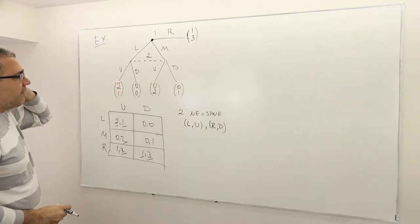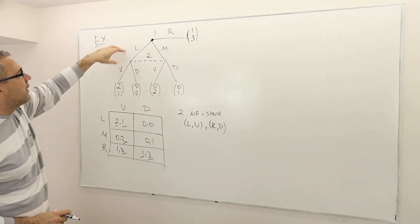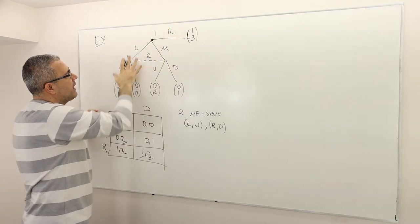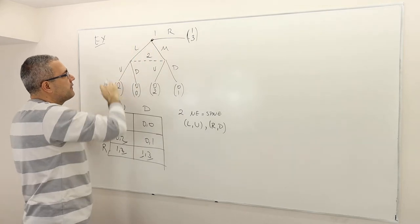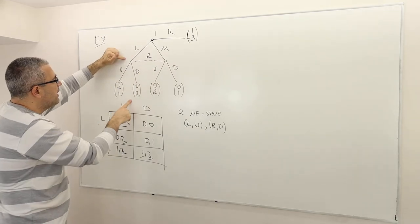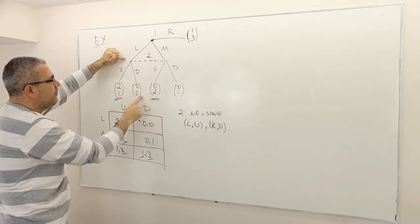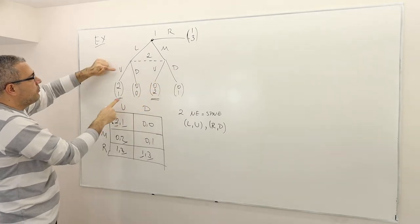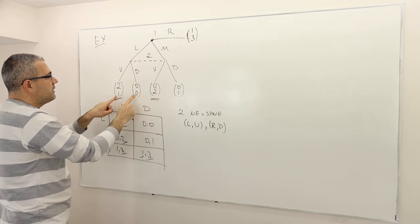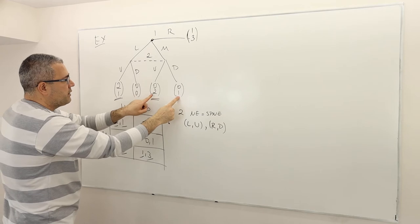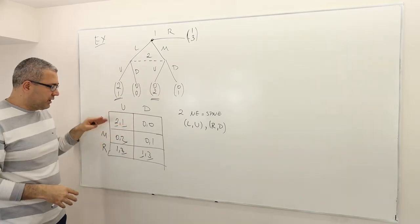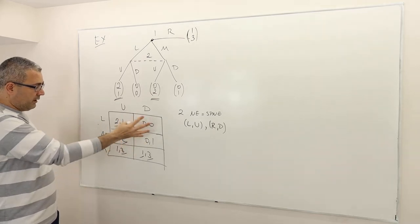Nash equilibrium and subgame perfect Nash equilibrium are exactly the same thing in this game because there is no proper subgame. So let's look at those Nash equilibria. I want to point out one thing. Forget about R. If you look at this part of the game where player one plays either L or M — meaning information set two is reached — playing U is obviously better for player two than playing D, right? Because if you play U, you get either one or two. However, if you play D, you get either zero or one. So clearly, D is always worse than U.